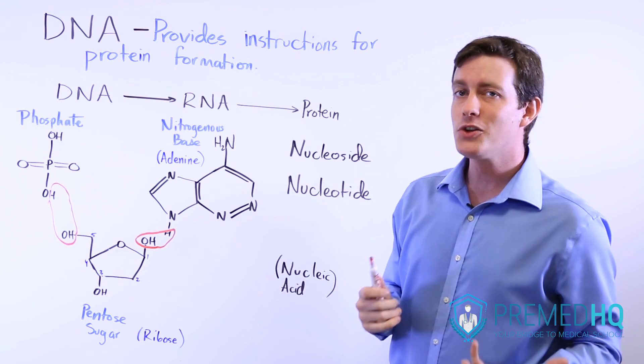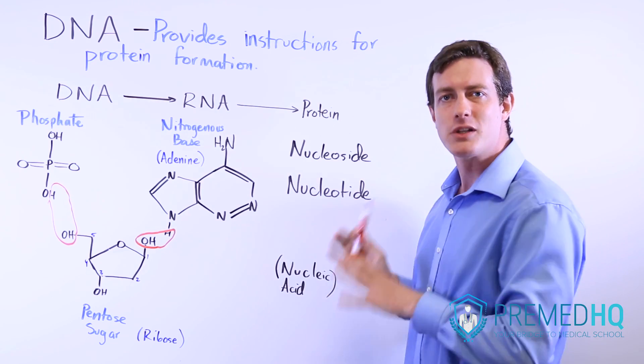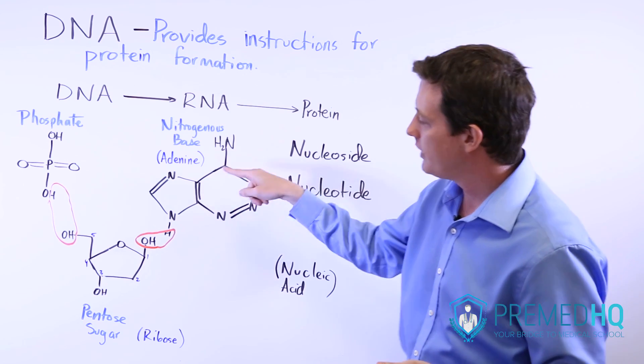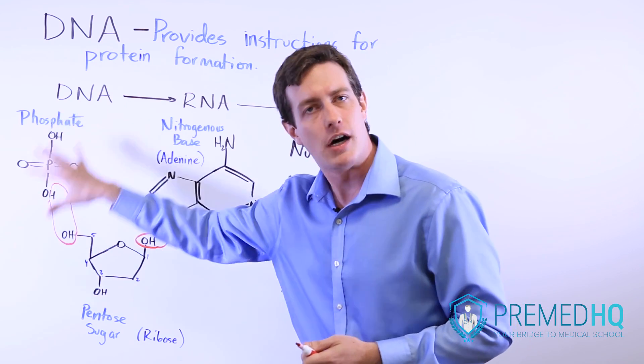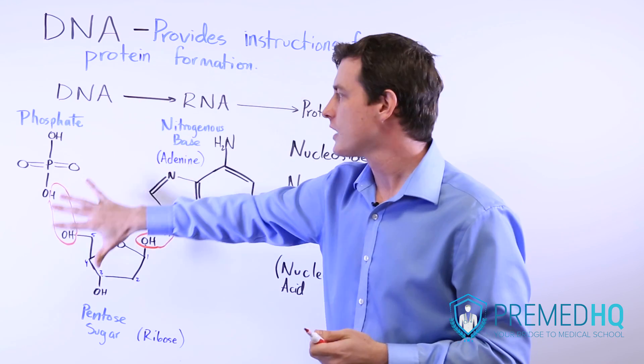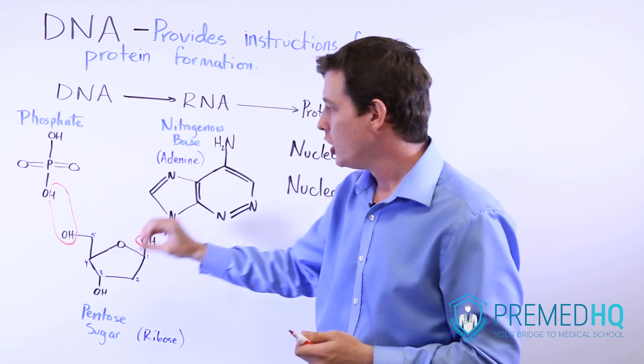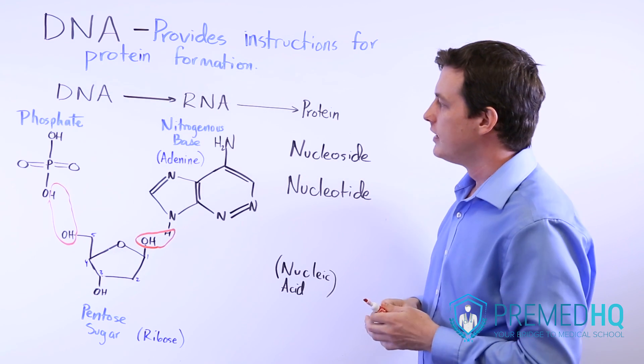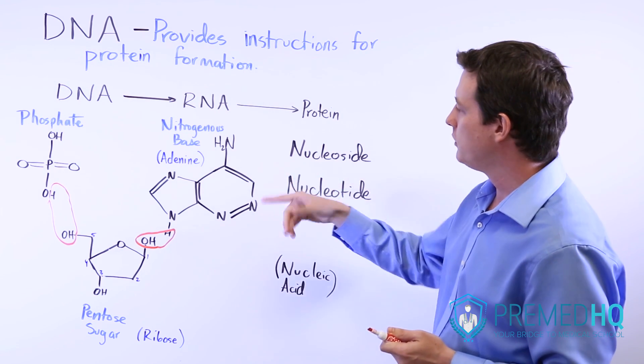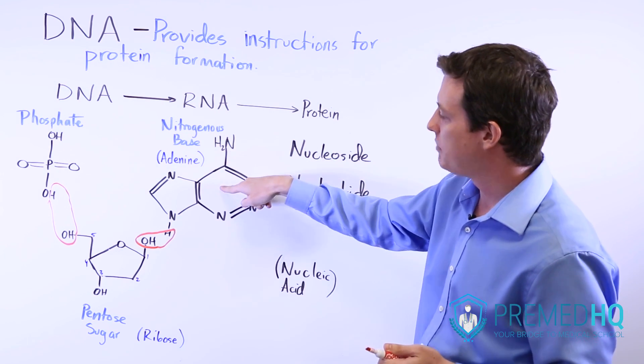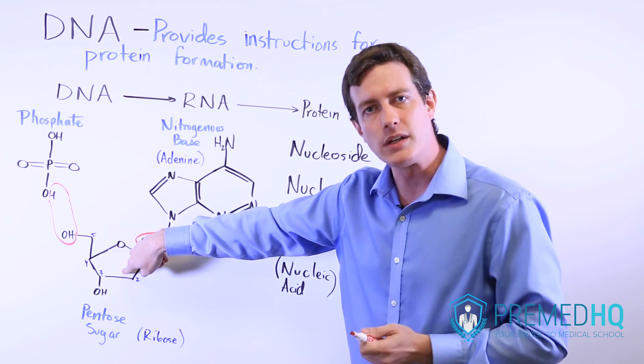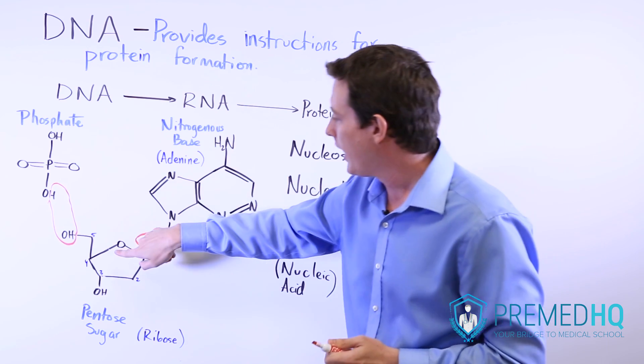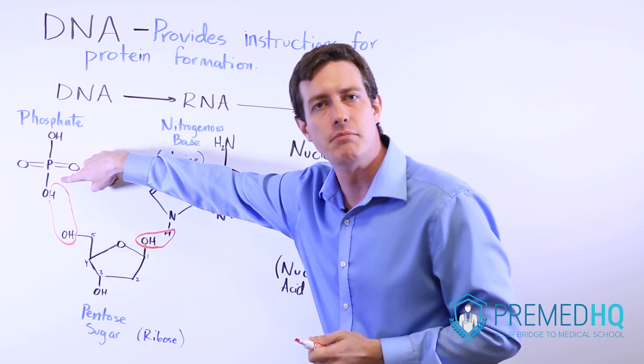You may also encounter the term nucleoside. A nucleoside is the nitrogenous base with the pentose sugar, but no phosphate group. So nucleosides do not have a phosphate. Nucleotides do. The way I think is good to remember this is you think of nucleoside as having a nitrogenous base and a second component.